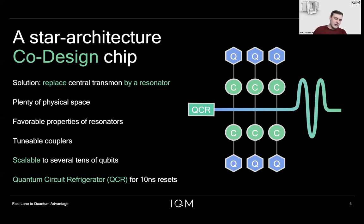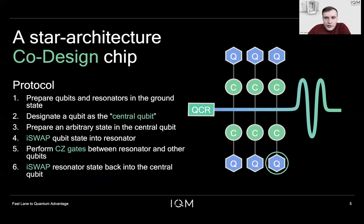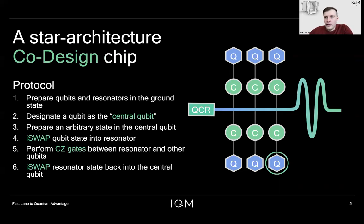You might ask: we said we want a star architecture chip with a qubit in the middle, but this is a resonator — we can't use a resonator as a qubit, right? Here's how we do it. We cannot drive the resonator directly because that would populate higher states, but we can use it indirectly. We start by initializing all qubits and the resonator in the ground state, then designate one qubit as the central qubit. We prepare an arbitrary state in the central qubit with our drive line, then send a flux pulse to the coupler to perform an iSWAP gate between the qubit and the resonator 0-1 subspace, moving the qubit state into the resonator.